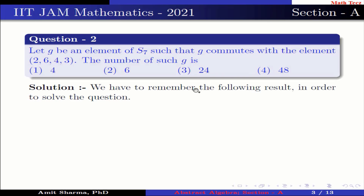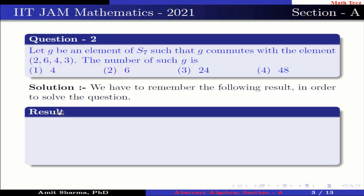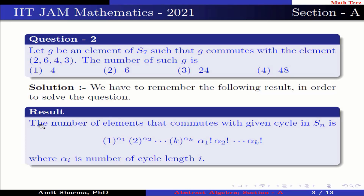We have to remember the following result in order to solve the question. The number of elements that commute with a given cycle in Sn is 1^(alpha_1) · 2^(alpha_2) · ... · k^(alpha_k) · alpha_1! · alpha_2! · ... · alpha_k!, where alpha_i is the number of cycles of length i.